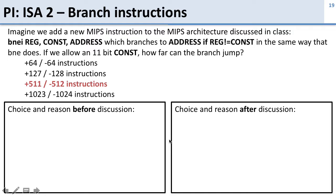The answer is going to be plus 511 or minus 512 instructions. The offset for branches is a two's complement value, and two's complement values always go to a larger negative number than a positive number.